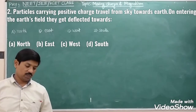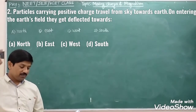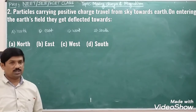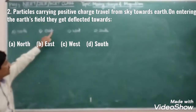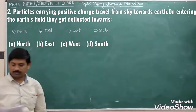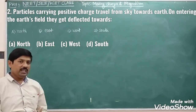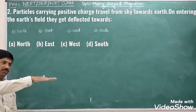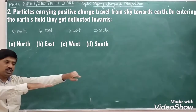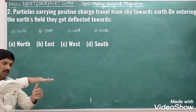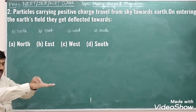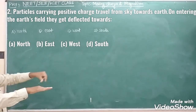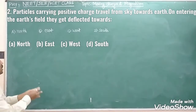Next question: particles carrying positive charge travel from the sky towards the earth. On entering the earth's magnetic field, they get deflected towards which direction? The options are north, east, west, and south. To find the direction, we apply the right-hand thumb rule. The fingers point in the direction of the magnetic field and the thumb points in the direction of current. Positively charged particles are deflected towards the east. Option B is correct.